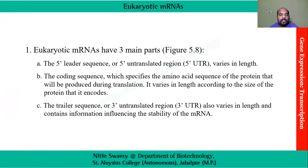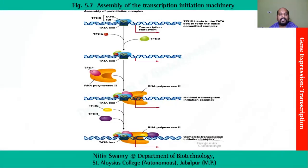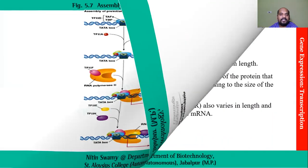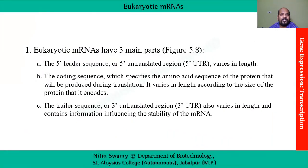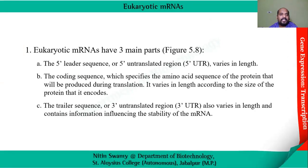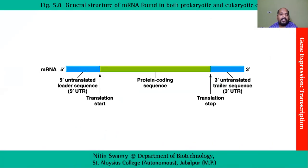This complex completes the process. Now we will see how eukaryotic mRNA looks. This is the structure of mRNA: we have the 5' end and an untranslated leader sequence, which is the point for translation starting; after that we have the protein coding sequence, followed by the translation stop and the 3' untranslated trailer sequences.